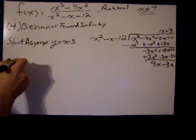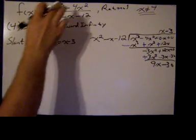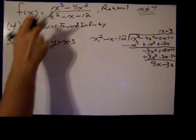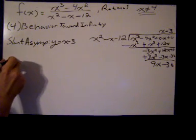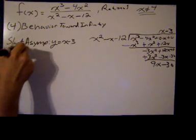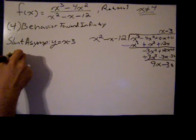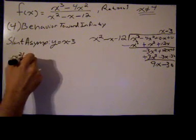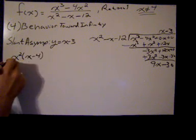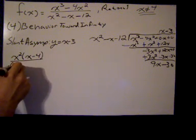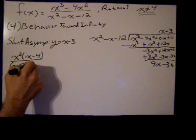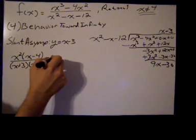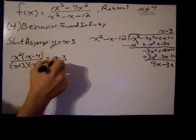But this is definitely true. If this function crosses this function, then y equals this and y equals that. So we can say, and I'm going to put this in factored form, x squared times x minus 4 divided by x plus 3 times x minus 4 equals x minus 3.